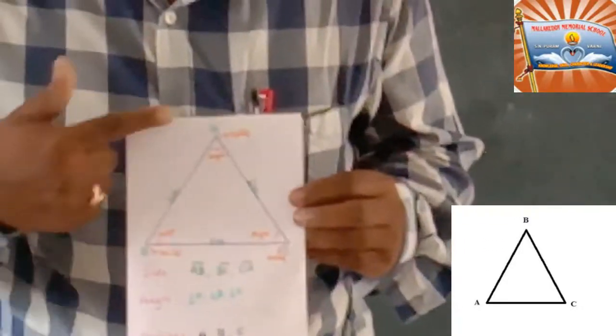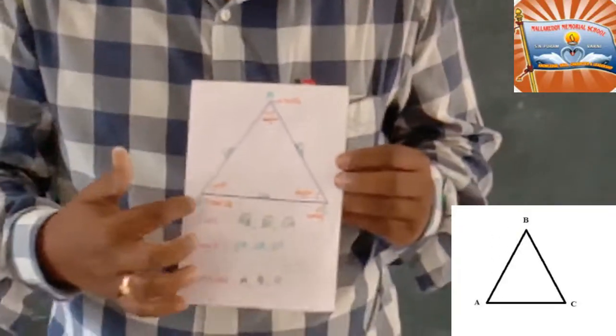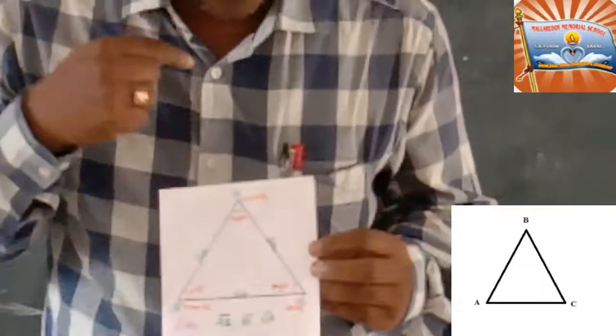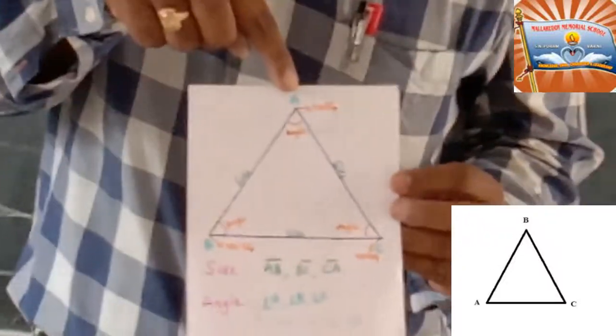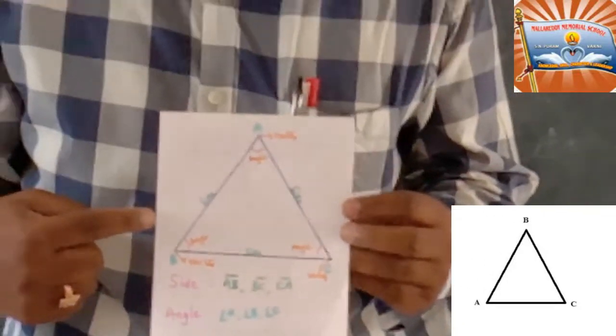In triangle ABC, AB is a side, BC is a side, and CA is another side. There are three sides in this ABC triangle.